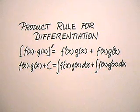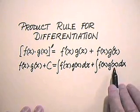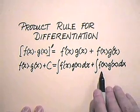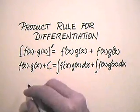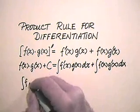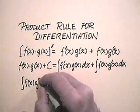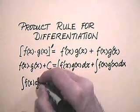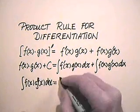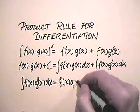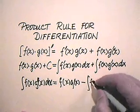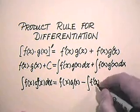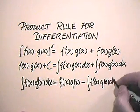Notice that this can easily be rearranged to give an indefinite integral formula. If I take one term and move it to the left, what we get is the formula: integral of f(x)g'(x) dx equals f(x)g(x) minus the indefinite integral of f'(x)g(x) dx.